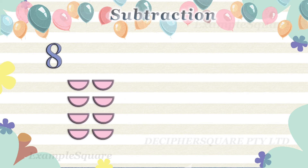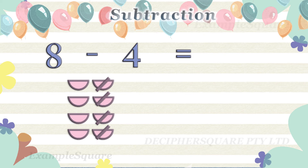There are eight pink semicircle shapes. How many semicircle shapes are left if four semicircle shapes are taken away from eight semicircle shapes?